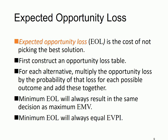The previous example shows how to make a decision based on EMV. Sometimes you choose the alternative with the highest EMV; sometimes you choose the one with the lowest EMV — it depends on the context. For example, if your payoffs are costs and you want to minimize costs, choose the lowest EMV. If the goal is to maximize profit, choose the highest EMV. In the previous example, we can also make the decision based on expected opportunity loss, or EOL.